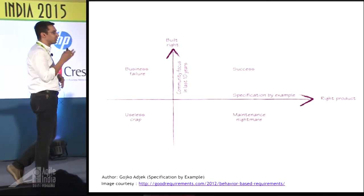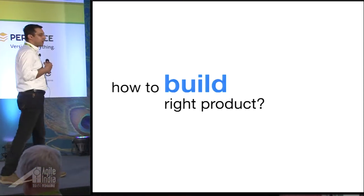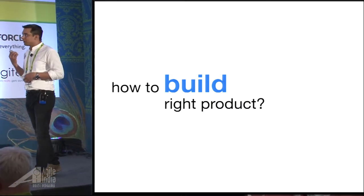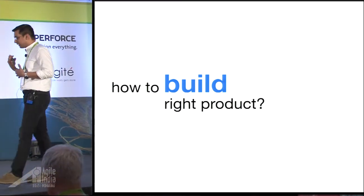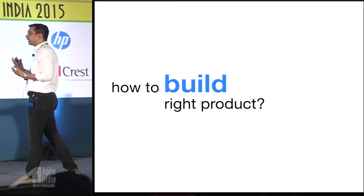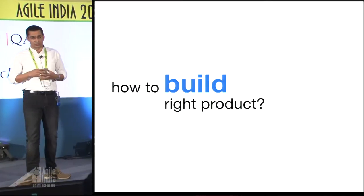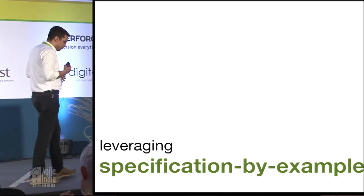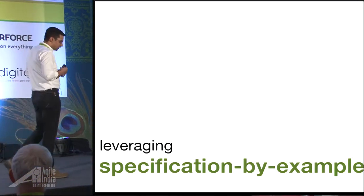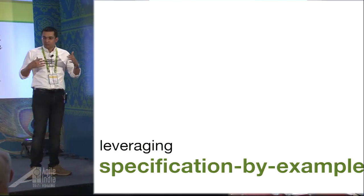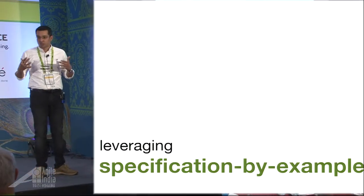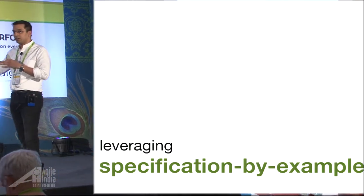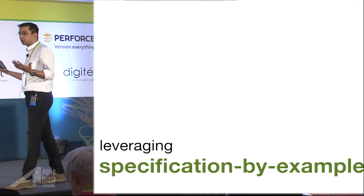For any business, no one wants to end up in any quadrant other than the success quadrant. So what is needed, and how can we ensure that we are building the right product? One of the simple solutions is by leveraging Specification by Example. Specification by Example — SBE — is a process to define business goals and requirements by specifying examples. The end users and SMEs actually tell you how the product should behave, rather than us making assumptions about what we think the product should do.